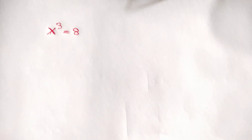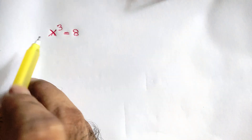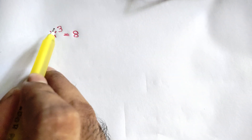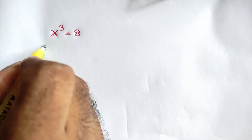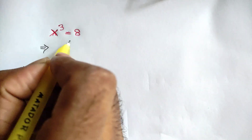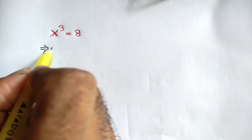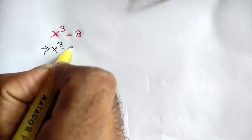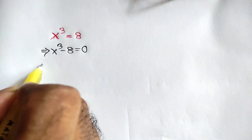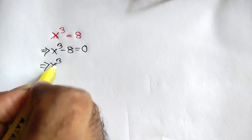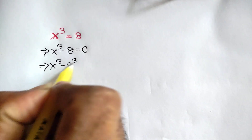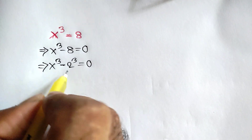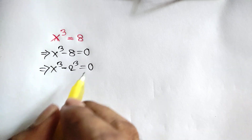Hi everyone. In this video I am going to show how to find the value of x where x cube is equal to 8. Taking this 8 to the left side we can write x cube minus 8 is equal to 0, or x cube minus 2 cube, because 2 cube is the same as 8, is equal to 0.